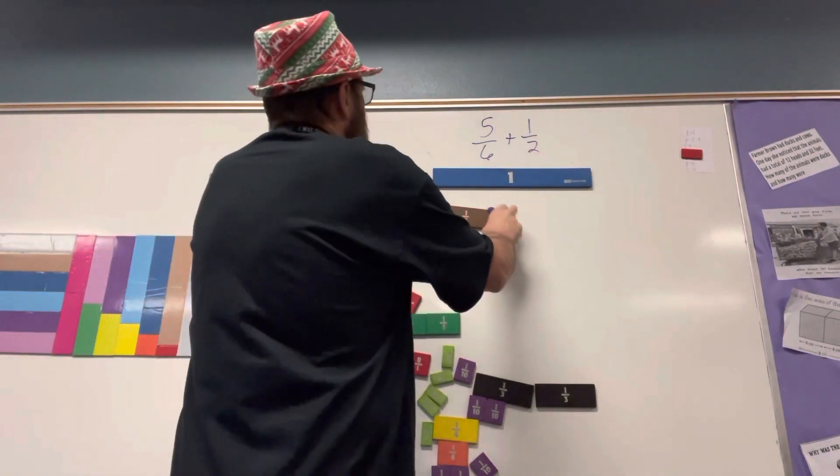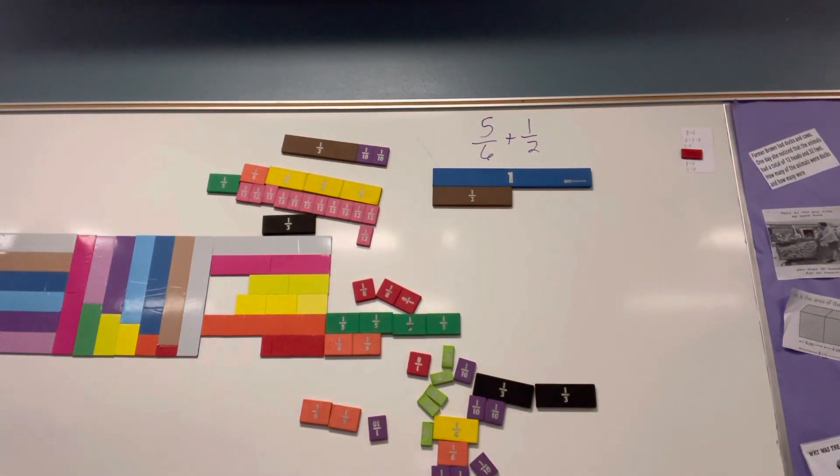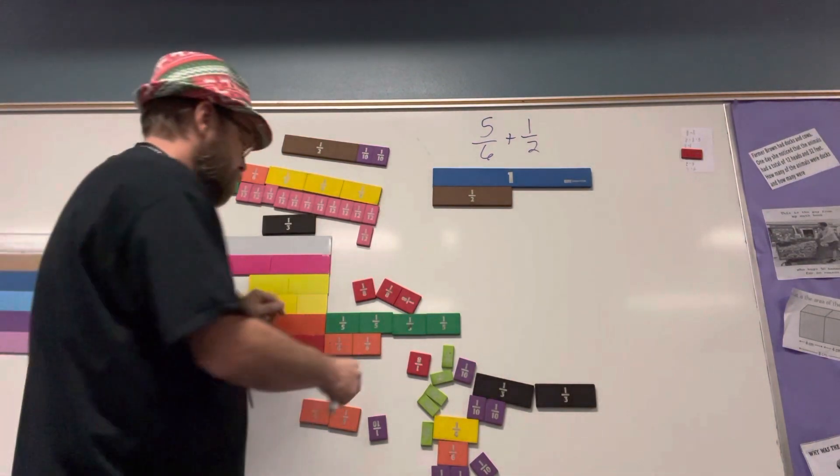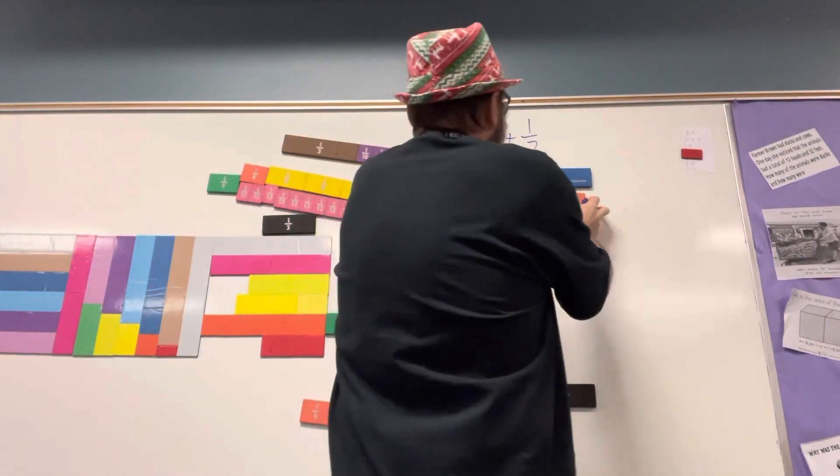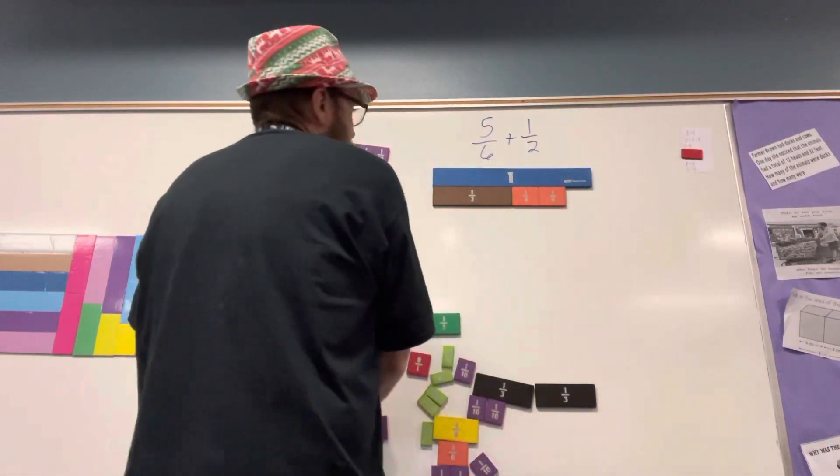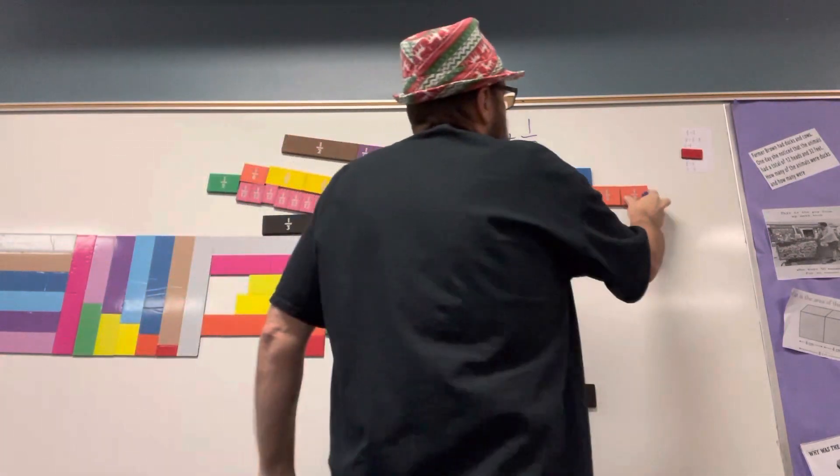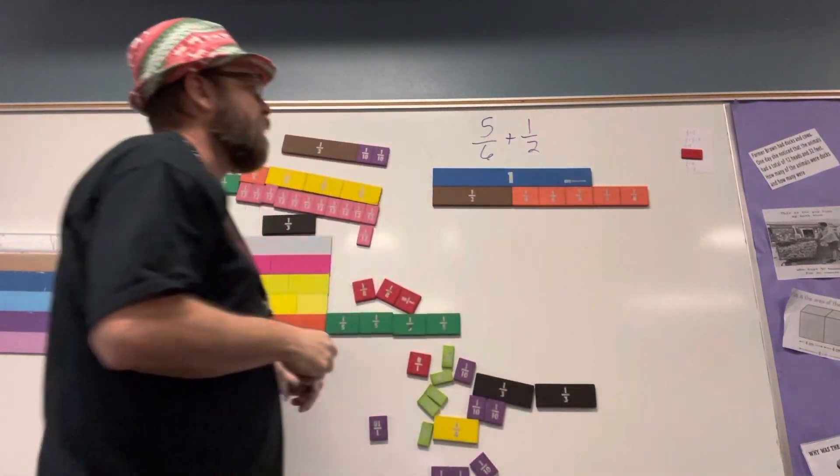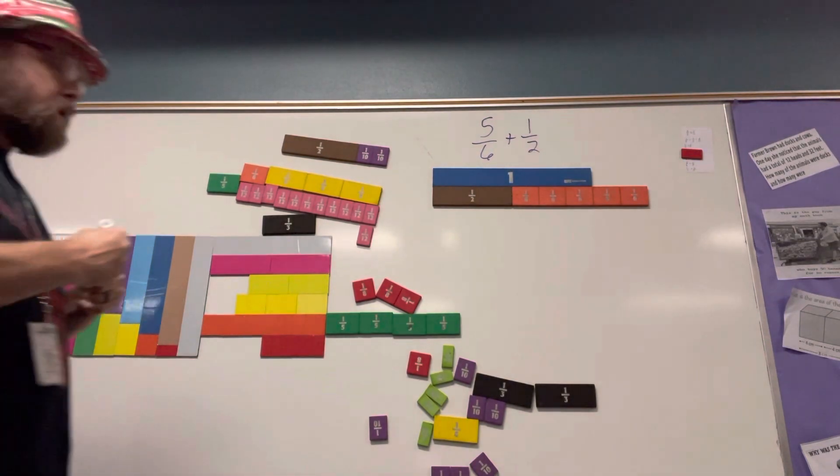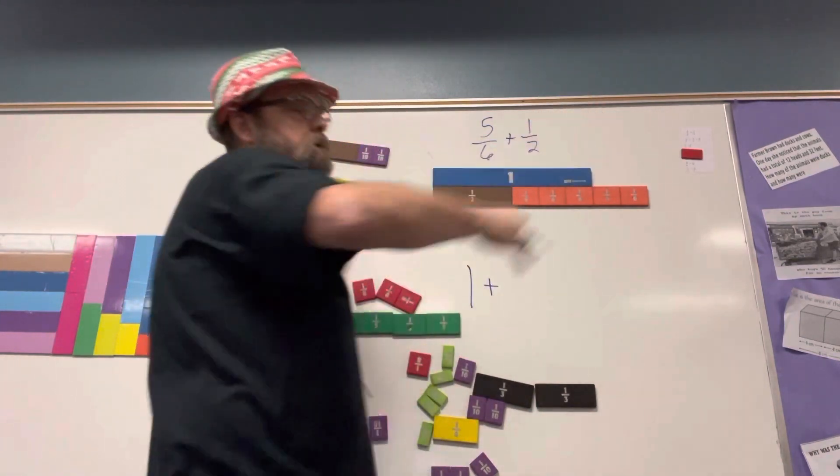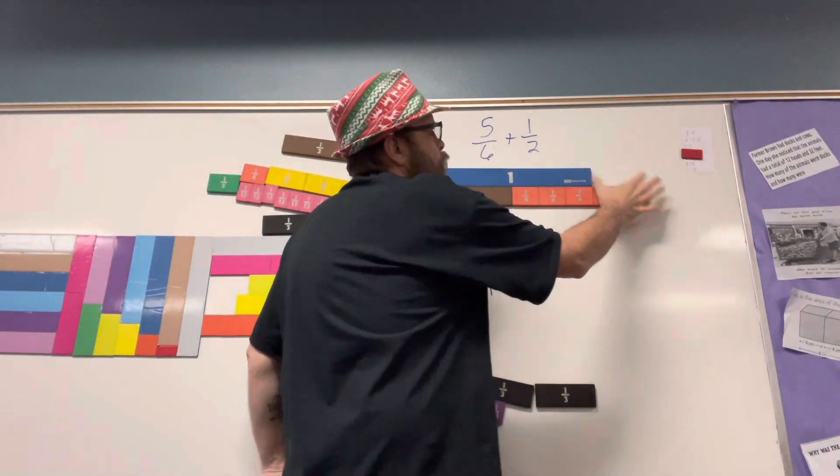Thanks to all those of you that have your computers closed. So we have five sixths plus one half, and you know it's addition so it doesn't matter what order it goes in. Is my answer less than or greater than one? Greater than one. So I know I'm going to have one plus something.